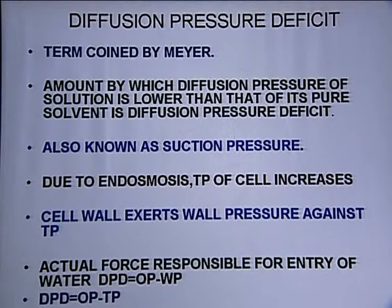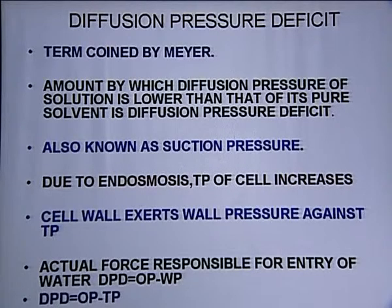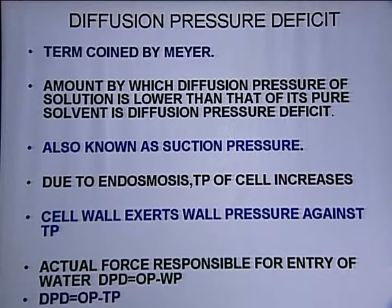When we place a cell in a hypertonic solution — hypertonic means more concentration of solute particles and less concentration of solvent particles — the concentration of solute outside is higher and solvent is less. That means solvent concentration is higher inside the cell, so water will move outside the cell. Exosmosis occurs.